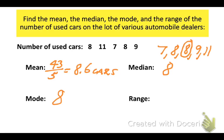Now, the range is found by subtracting the high, which is 11, minus the low, which is 7. And that gives us a range of 4. And the range tells us how spread out the data happens to be.